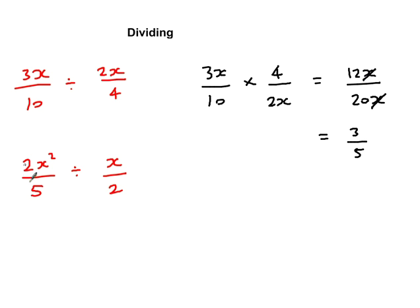And then the last one. Let's do the same thing. So we keep the first fraction, so 2x squared over 5 times by 2 over x. Simplify this. So this is going to be 2x squared times 2, which is 4x squared over 5x.